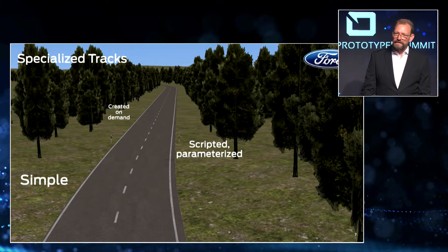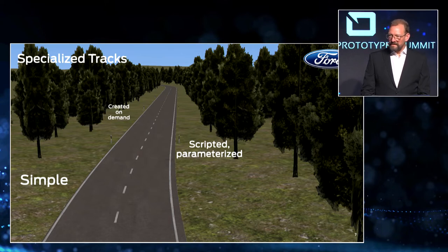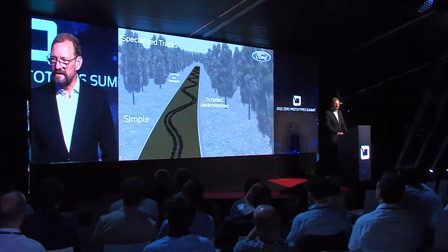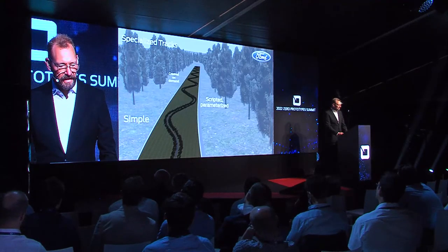Different from the proving ground, where you might find the right cornering situation, do your test, and then have to drive a complete lap to come to that same radius again — we have created tracks with the correct radius one after the other, really allowing continuous testing without all those break times.